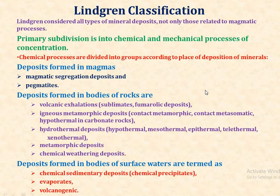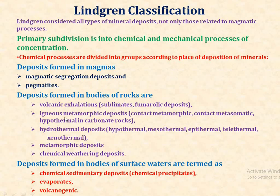The most important classification is Lindgren's classification. Lindgren considered all types of mineral deposits, not only those related to the magmatic process. The primary subdivision is into chemical and mechanical processes of concentration. Chemical processes are divided by place of deposition: deposits formed in magma (magmatic segregation and pegmatitic deposits); deposits formed in bodies of rock, including volcanic exhalations, sublimates, fumarolic deposits, igneous metamorphic deposits, contact metamorphic, contact metasomatic, hydrothermal in carbonate rocks, and hydrothermal deposits — hypothermal, mesothermal, epithermal, telethermal, and geothermal.